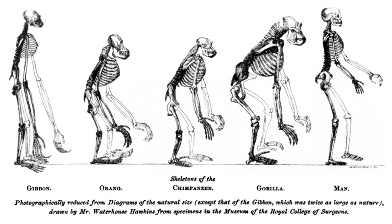Thus, whatever system of organs be studied, the comparison of their modifications in the ape series leads to one and the same result — that the structural differences which separate man from the gorilla and the chimpanzee are not so great as those which separate the gorilla from the lower apes. If man is separated by no greater structural barrier from the brutes than they are from each other, there would be no rational ground for doubting that man might have originated by the gradual modification of a man-like ape. At the present moment there is but one hypothesis which has any scientific existence — that propounded by Mr. Darwin.